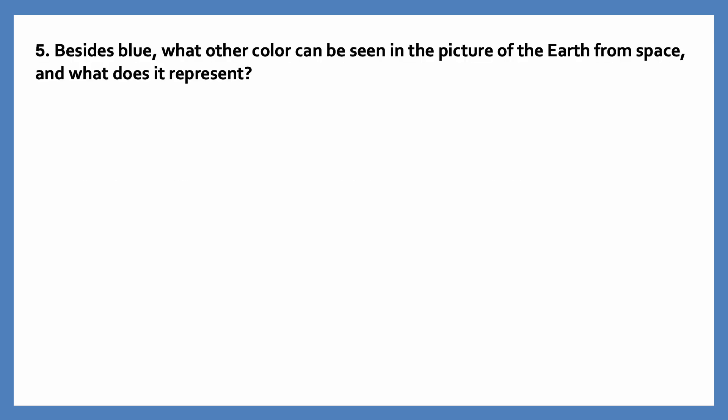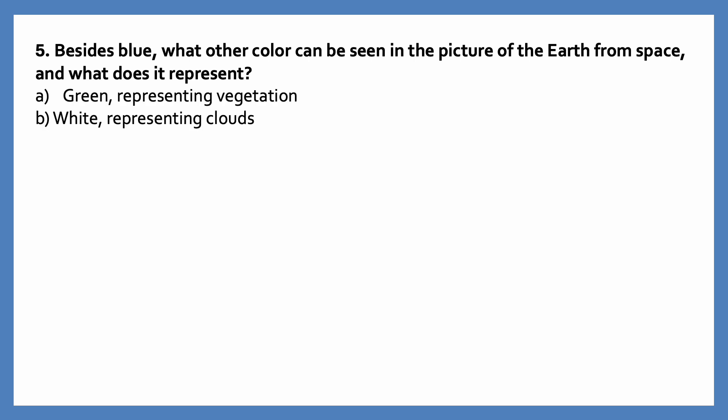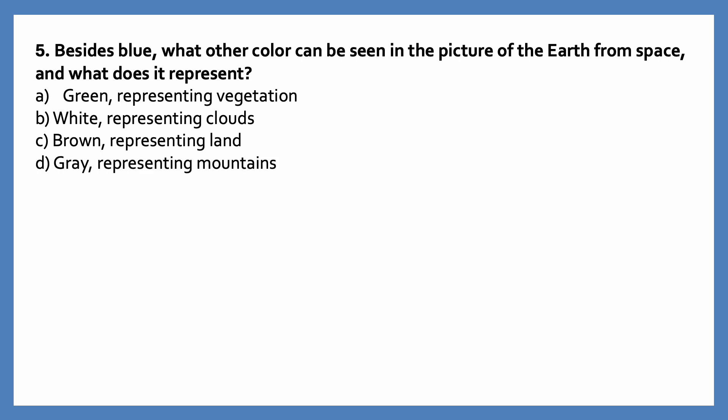Besides blue, what other color can be seen in the picture of the earth from space, and what does it represent? Options are green representing vegetation, white representing clouds, brown representing land, gray representing mountains. The correct answer is brown representing land.